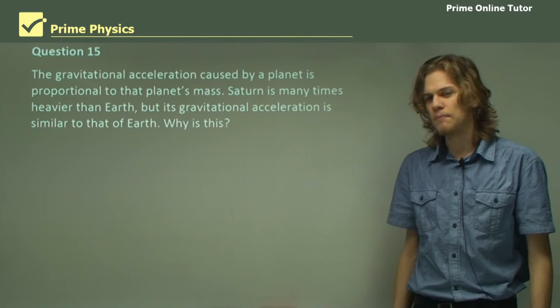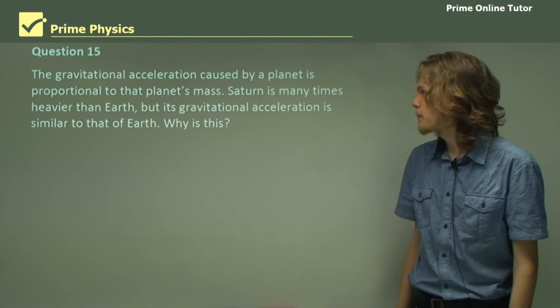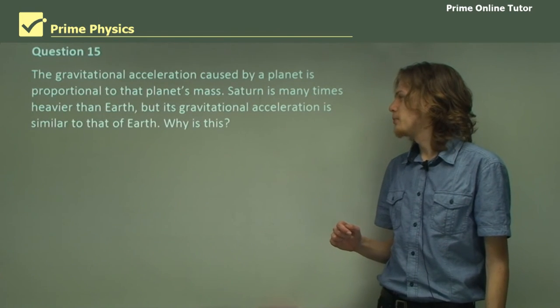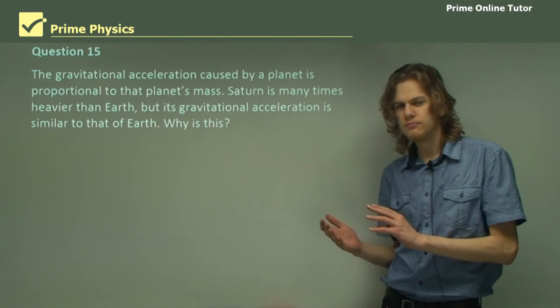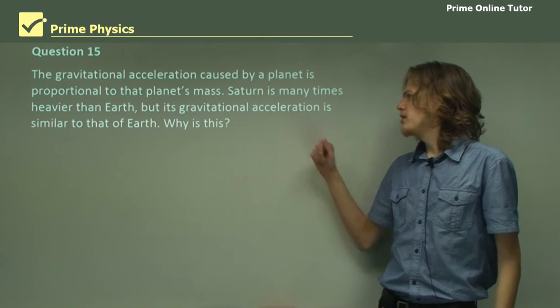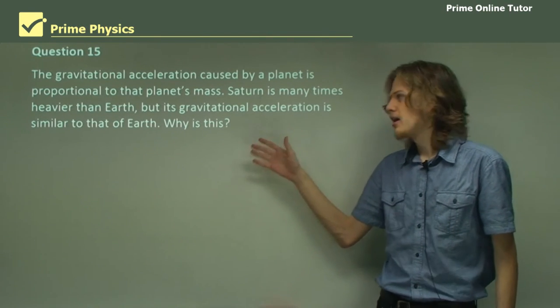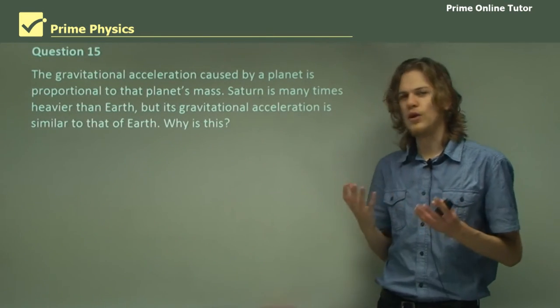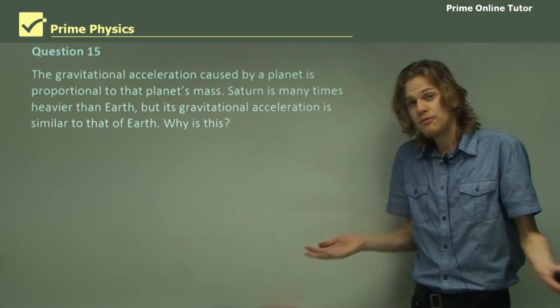Question 15, the last question of this section. The gravitational acceleration caused by a planet is proportional to that planet's mass, right? But Saturn is many times heavier than Earth and has a similar sort of gravitational acceleration. How can that be?